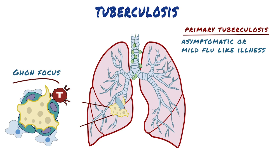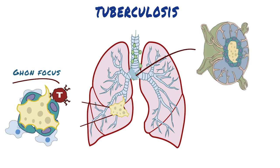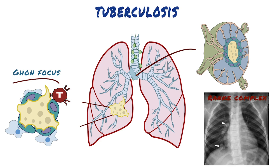Tubercle bacilli, either free or within phagocytes, drain to the regional nodes and cause caseation there as well. This combination of parenchymal lung lesion and nodal involvement is referred to as the Ghon complex. Some lesions may heal by fibrosis with subsequent calcification and produce scar tissue that can be seen on X-ray. This calcified Ghon complex is called a Ranke complex.